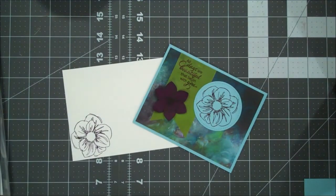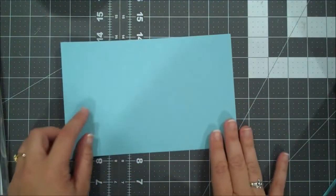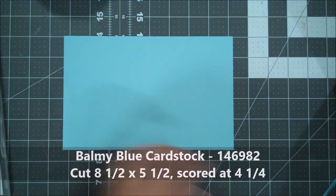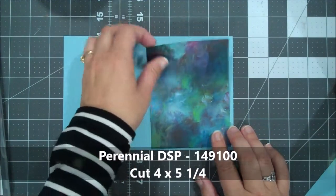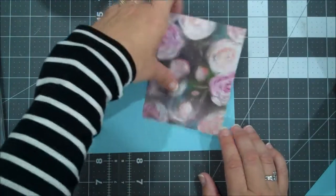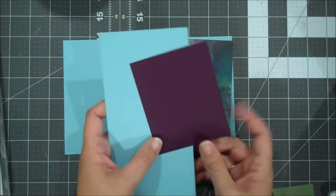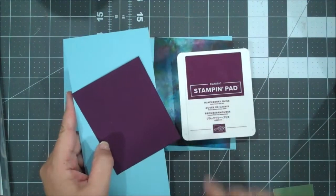Alright, so let's jump in here. For our card base, we are using a piece of balmy blue. This is 8 1/2 by 5 1/2. It's scored at 4 1/4. I have a piece of the perennial designer series paper that is 4 by 5 1/4. You can see either one of these sides would look great. And then I have a scrap piece of balmy blue as well as blackberry bliss.